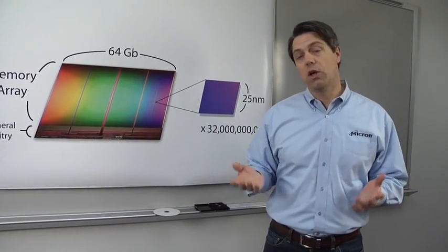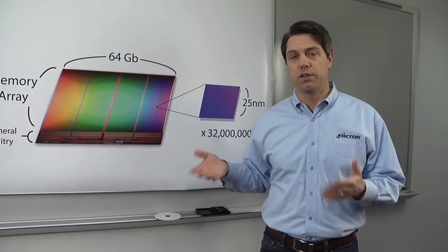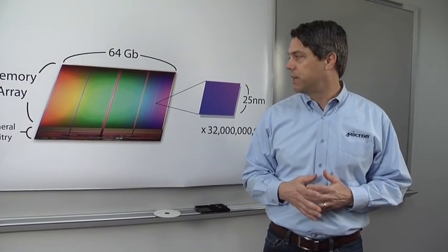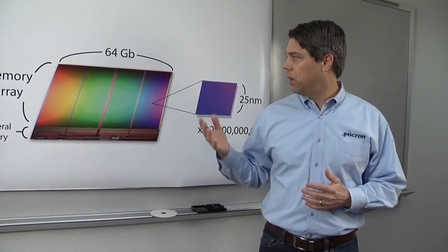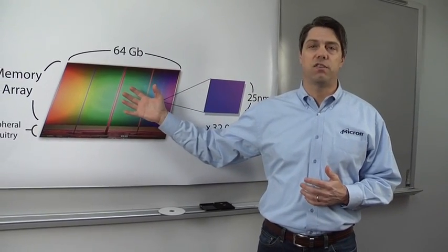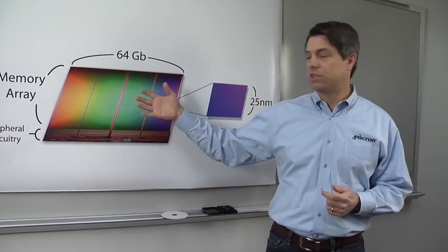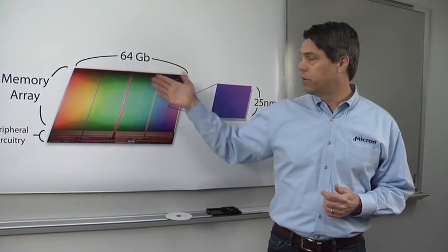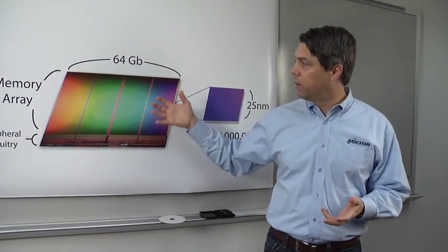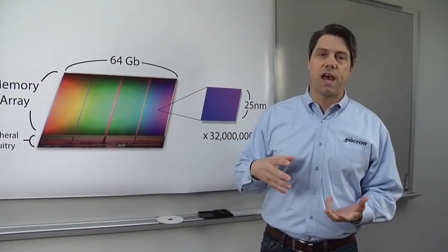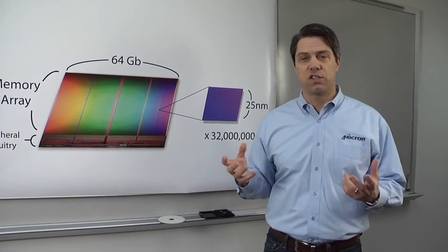And what that means to you, we also do it because you, the consumer, want more storage capacity. And increasing the density of the die, this is actually a doubling of the density compared to our previous highest density product, which was 32 gigabits or 4 gigabytes. So we've doubled it. Now you can double the capacity with an existing form factor.